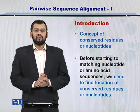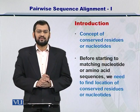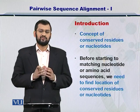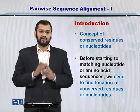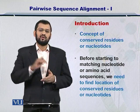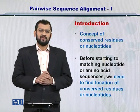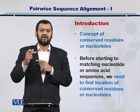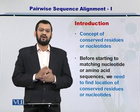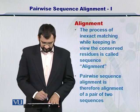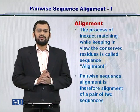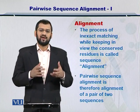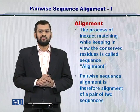To introduce you to the topic of pairwise sequence alignment, you need to identify conserved sequences — unchanged sequences or amino acids — within the overall sequence. To begin with, you need to check each amino acid in the corresponding sequence and see if there is a change or if they are conserved. This process involves inexact matching, or considering mismatches while matching the overall sequence.